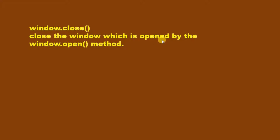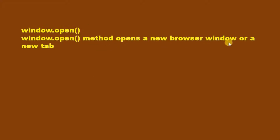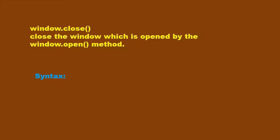window.close method closes the window which is opened by window.open method. window.open method opens a new browser window or a new tab, and window.close method closes that browser window with any size and specifications, or closes that tab. The syntax is window.close() with round brackets. This method does not require any parameter.